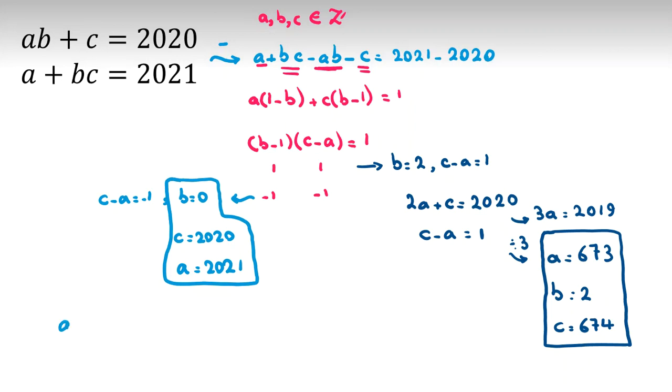Let me write the homework for you: abc + d = 2020 and a + bcd = 2021. It is your homework. Solve this where a, b, c, d are integers. Solve this and comment your answers right below this video.